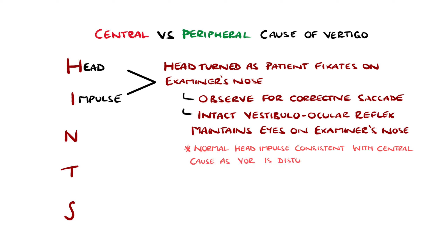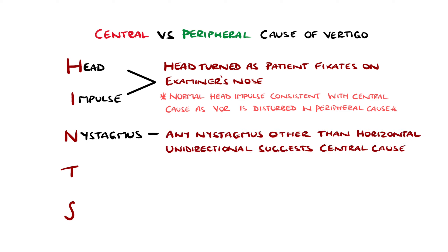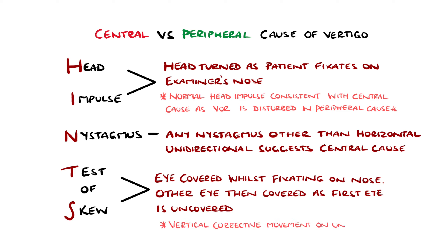N is for Nystagmus, a rhythmic involuntary movement of the eyes, with the direction of the saccadic movement being important. Bidirectional horizontal nystagmus or vertical nystagmus suggests a central cause. The final part of the HINTS exam is the Test of Skew, where the patient fixates on the examiner's nose, who then covers one of the patient's eyes before covering the other eye and uncovering the first whilst observing it for any movement. If there is presence of a vertical corrective movement, this suggests a central cause.